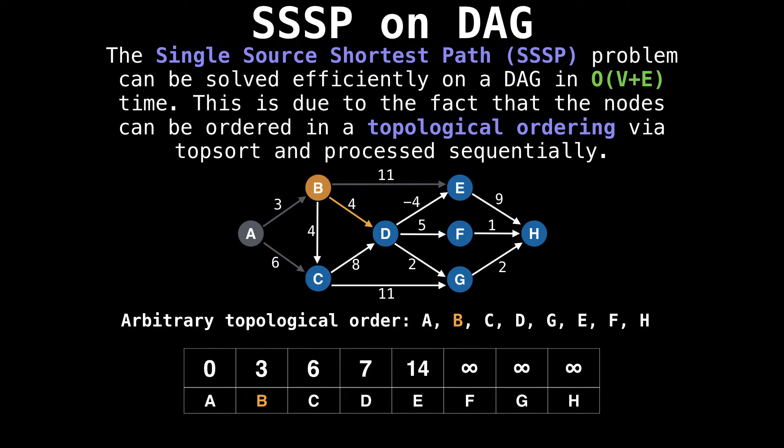Notice that edges get grayed out as they are being processed. Next, we update the best value to D to be seven.